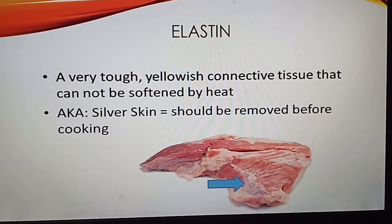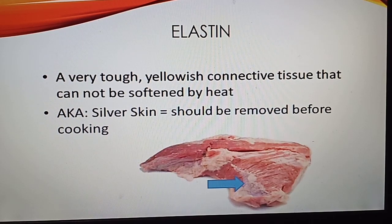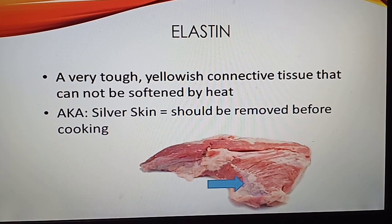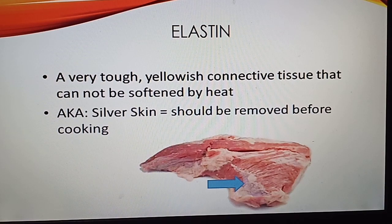Elastin is a very tough, yellowish connective tissue that cannot be softened by heat. It is also known as silver skin. Silver skin should be removed before cooking.